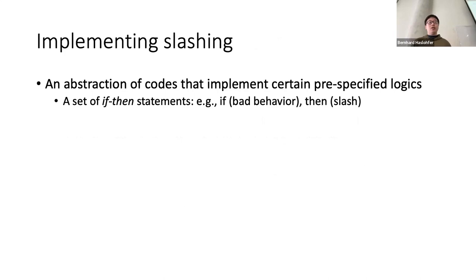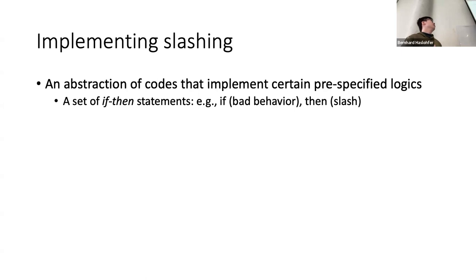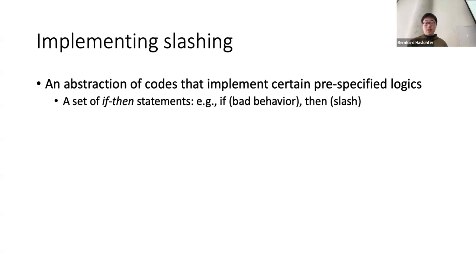The key properties are that we want this system — the traditional PBFT system — which is cryptographically correct and follows a set of rules, and based on that, it's guaranteed to reach consensus with safety and liveness properties. Here, we added proof-of-stake, which is crypto-economic safety. In such a system, we want to implement slashing. Slashing is basically an abstraction of code that implements certain pre-specified logic — essentially if-then-else statements. If we observe some bad behaviors in the system, then we want to slash and punish the stake.